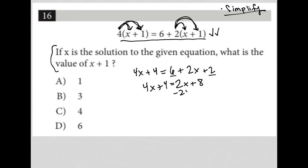Then combining like terms, subtract 2x from both sides and subtract 4 from both sides to get my x term on the left. So 4x minus 2x is 2x.